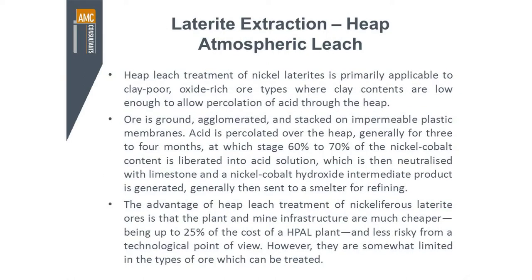Heap atmospheric leaching is a different process where you're fundamentally putting the material on a dump and allowing acid to leach through it to extract the nickel — at atmospheric pressures and temperatures. The ore is generally agglomerated and stacked on plastic membranes, and acid is percolated through the heap leach for a few months and then extracted and recovered. It's much cheaper to build with lower capital intensity, but it's very specific to the type of minerals hosting the nickel. If there's a lot of clay in the ore body, the clay will prevent the acid from percolating through the heap.